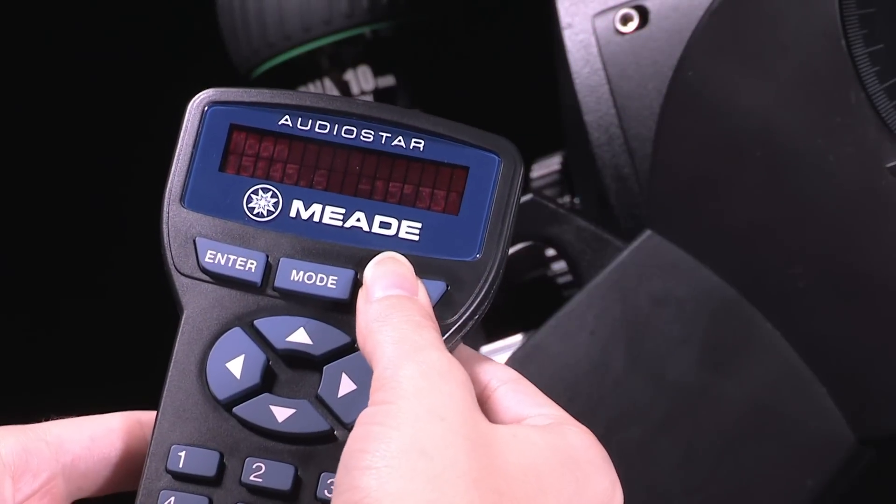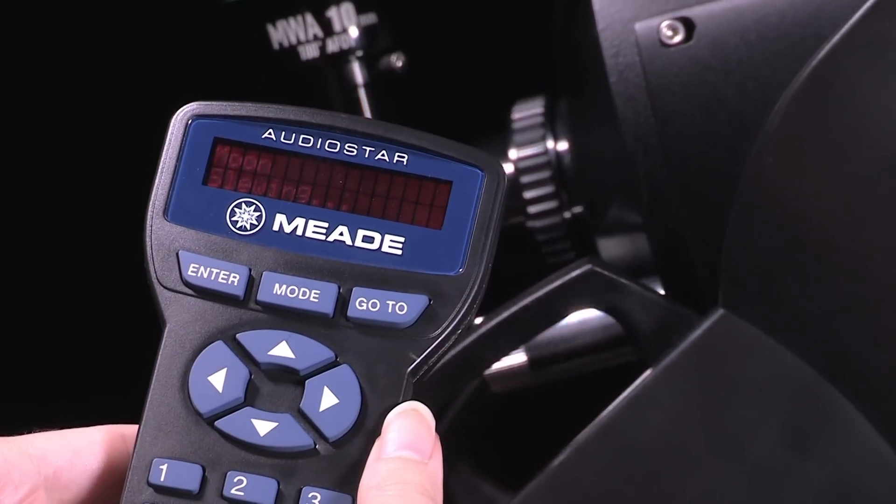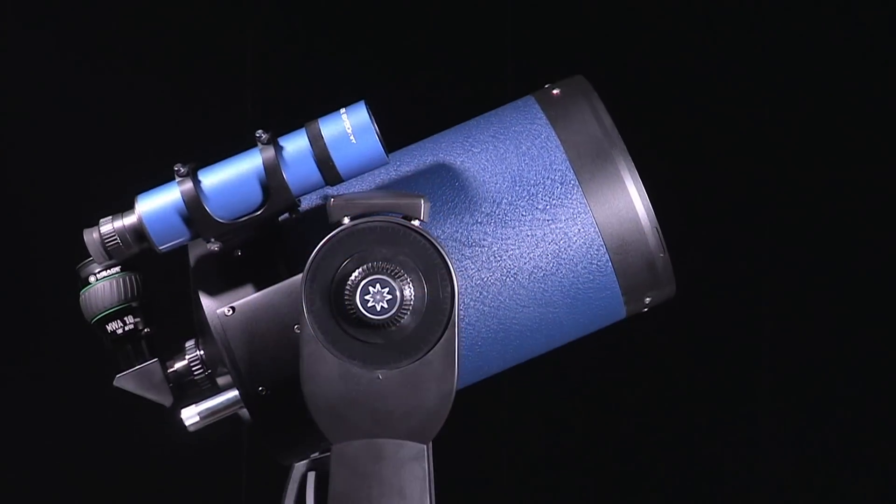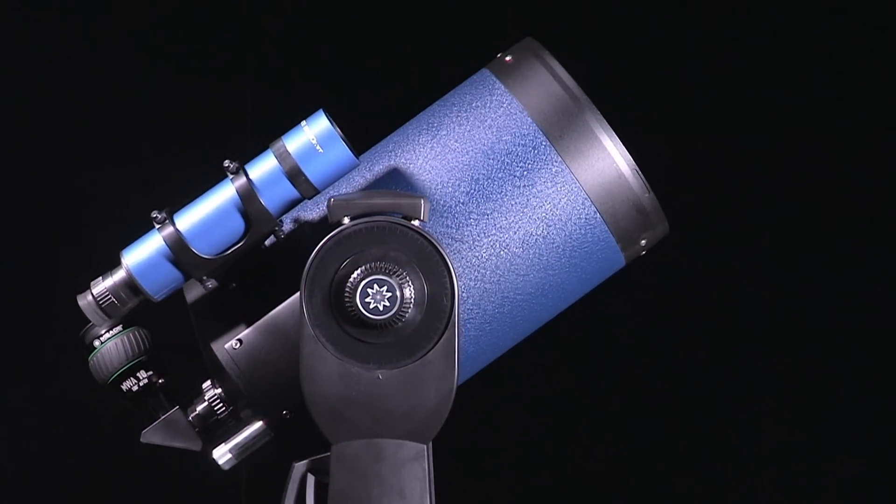Simply select a planet, galaxy, nebula, or star on the AudioStar hand control, and the LX90 will automatically point to it.